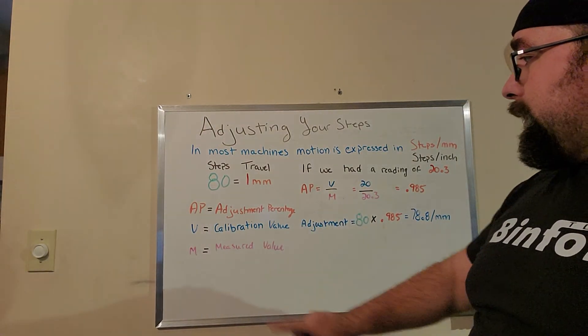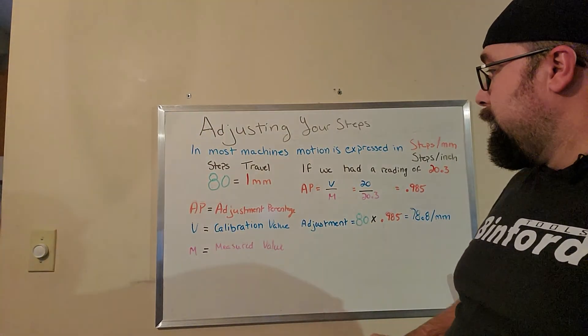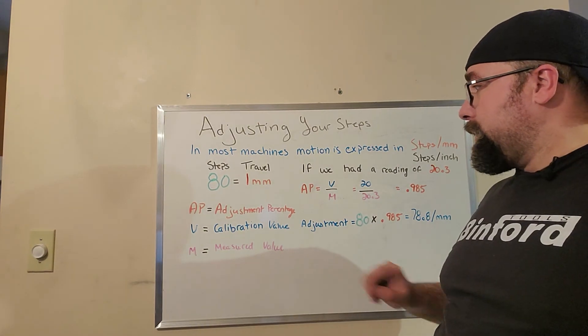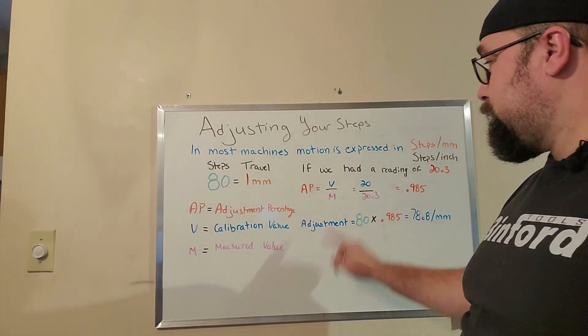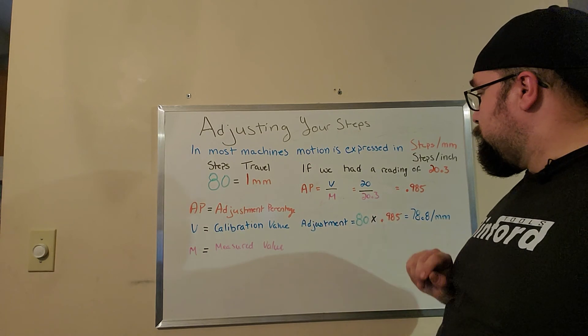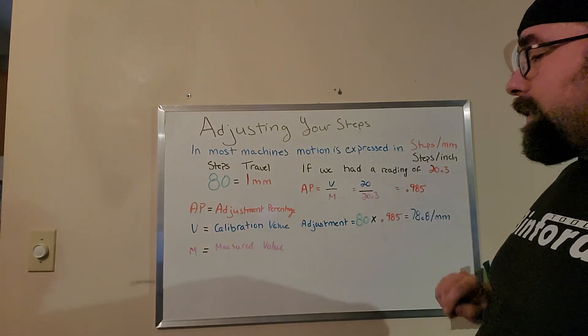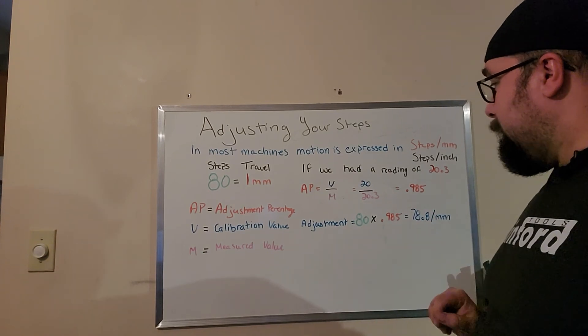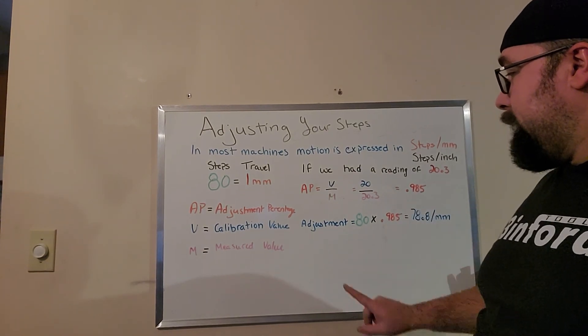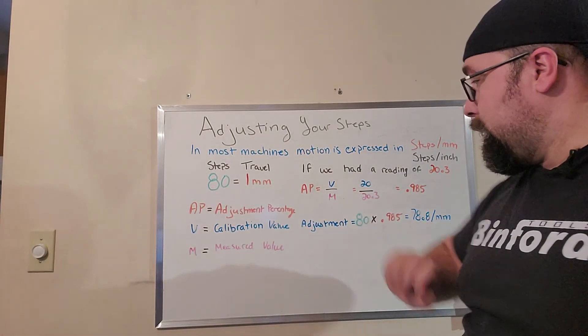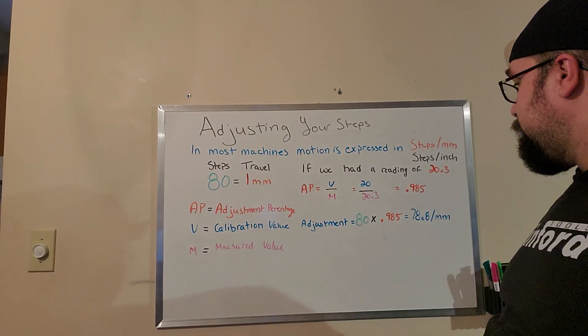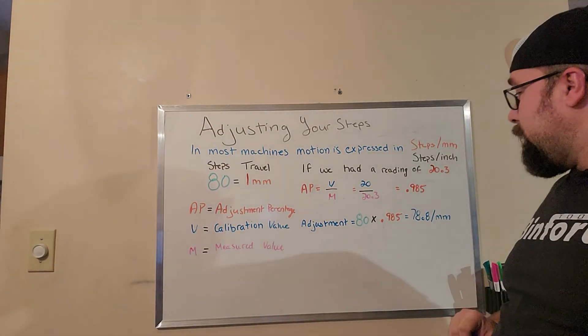We have our AP, which is our adjustment percentage, equals the calibration value, so that's our 20 millimeters, over the measured value or M, which was 20.3 millimeters. And that gives us this nice little decimal 0.985.